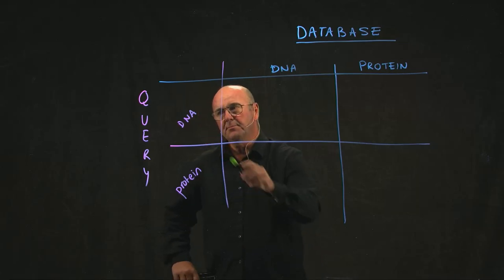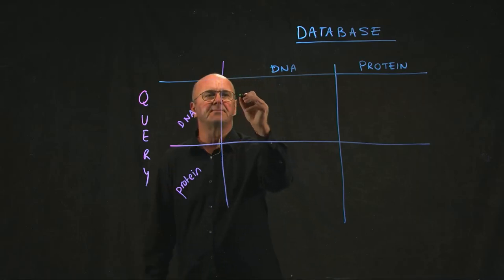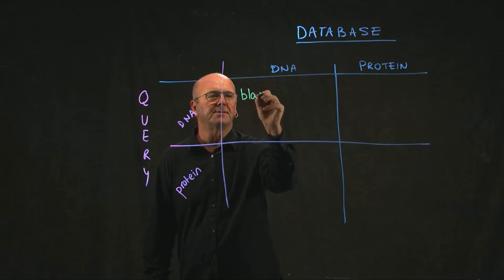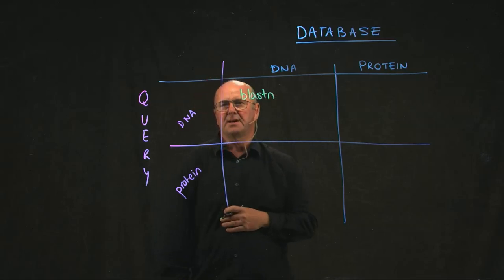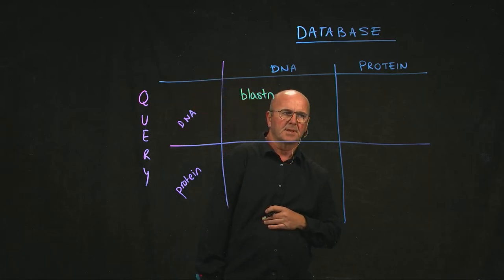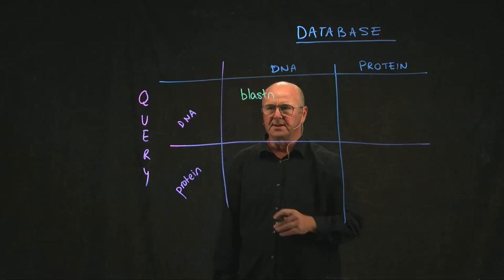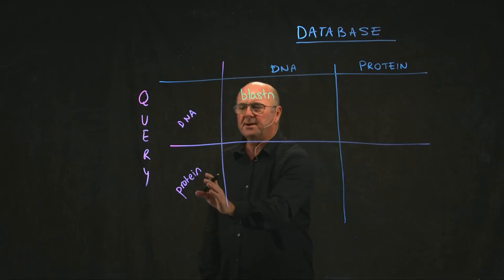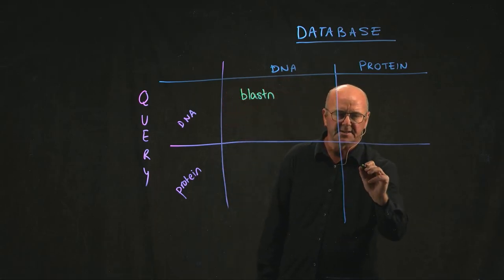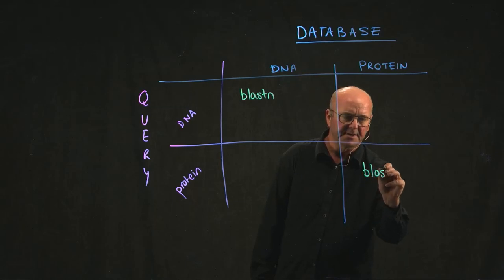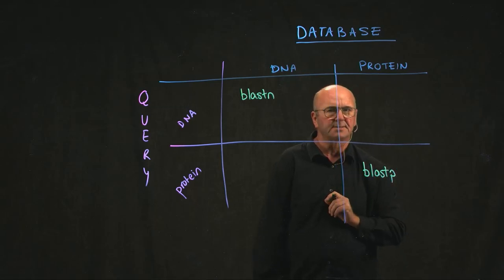If we're comparing a DNA query to a DNA database, the algorithm to do that is called BLASTN, for BLAST Nucleotide. And if we're comparing a protein query to a protein database, the algorithm to do that is called BLASTP.